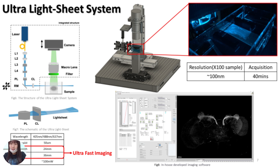This is the ultra-light-sheet microscope we developed. You can see in this table that we get a larger field of view, which means we have ultra-fast scanning speed. For the expanded sample, we have a resolution close to 150 nm, and the scan time is only 14 minutes. The light-sheet imaging software was developed by ourselves, and this video shows our preliminary results.